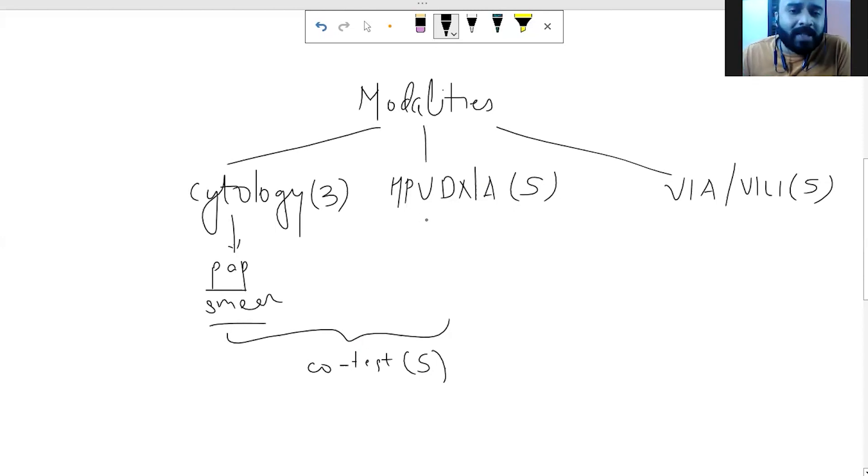The next test is what we call as the HPV DNA test. In this, from the sample, we check for the DNA of the human papilloma virus, the virus that causes cervical cancer. And we see to it if it is a high-risk DNA. So by high-risk, I mean there are around 200 different types of HPVs.